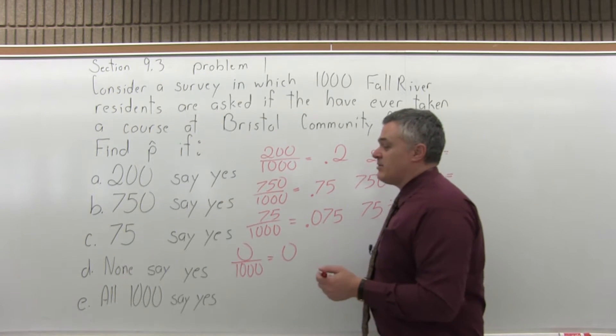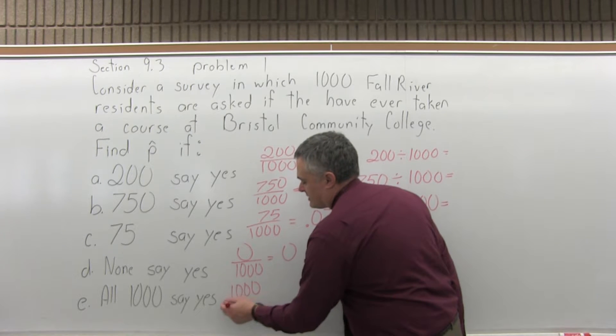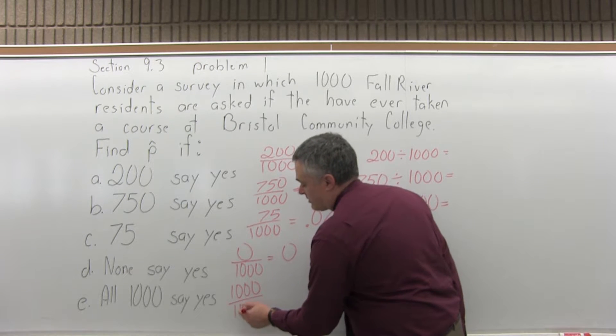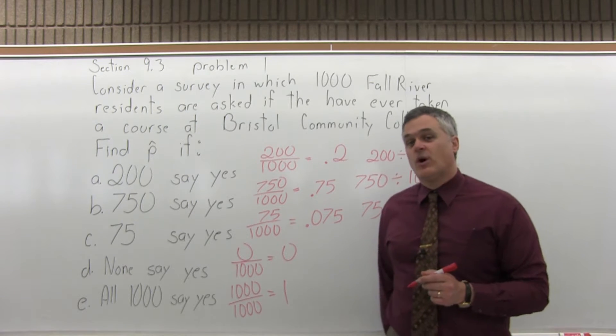How about if all 1,000 say yes? You'd have 1,000 say yes over the total number of people asked, 1,000. 1,000 over 1,000 would reduce to 1.